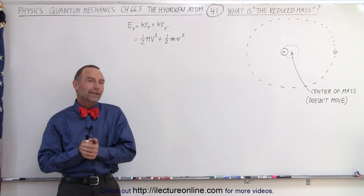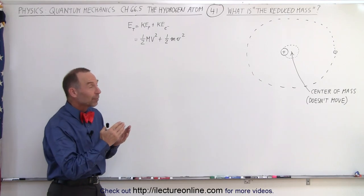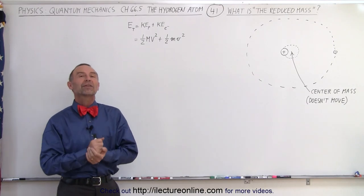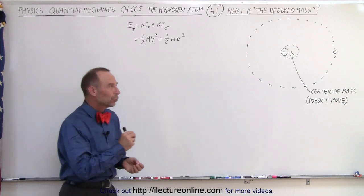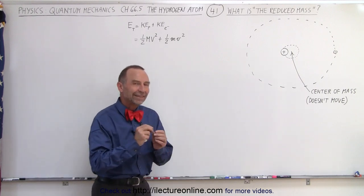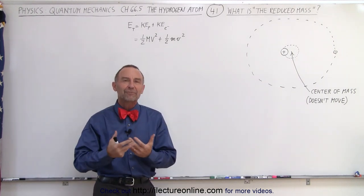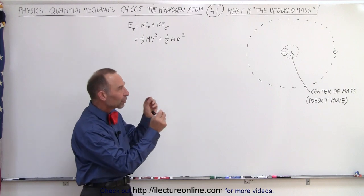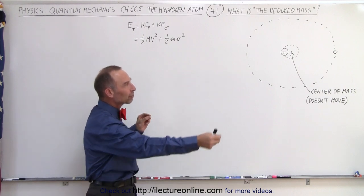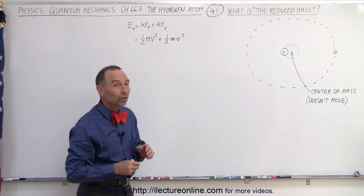Welcome to our lecture online. In this video we're going to talk about the reduced mass of an electron. The reduced mass is what we would call the effective mass of the electron because there's something going on when the electron revolves around the nucleus.